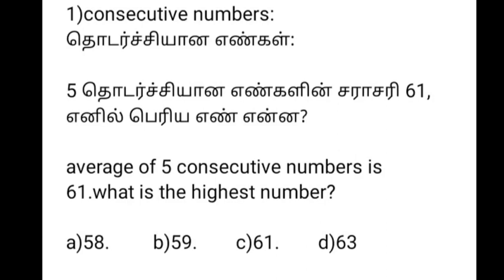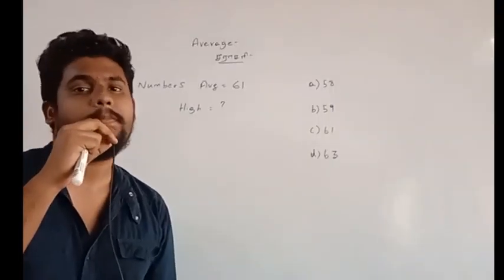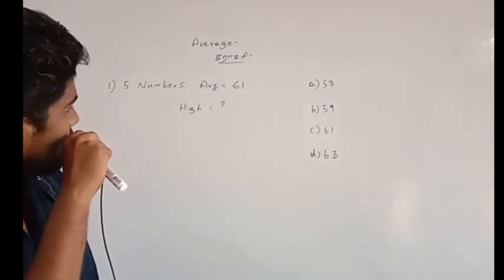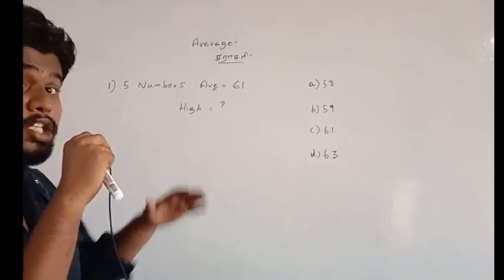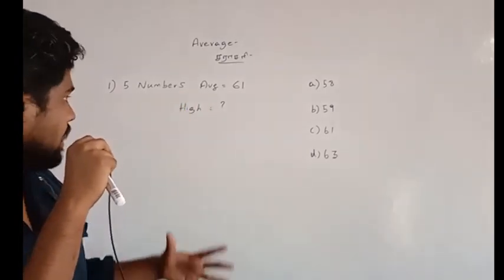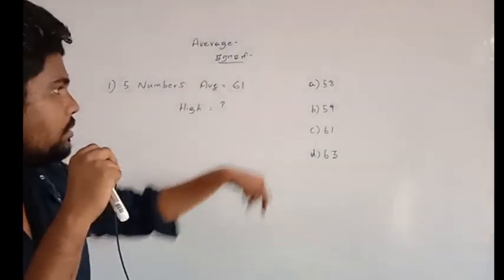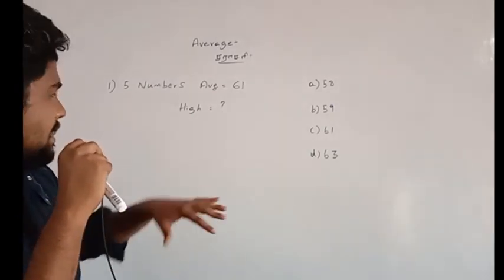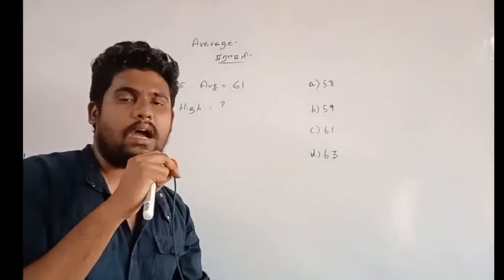So what is the answer? The average number is 61. The middle number is 61, so the numbers go 59, 60, 61, 62, 63. We can solve it because the answer is 63. This is the concept of average — it is equally distributed.